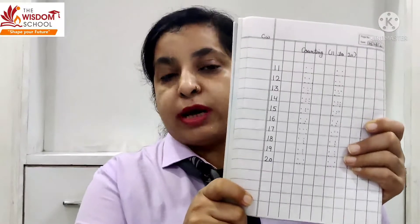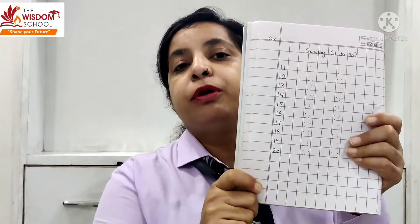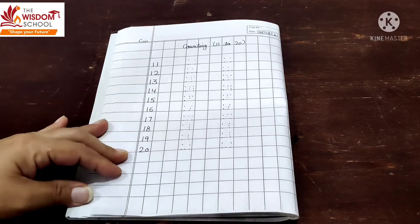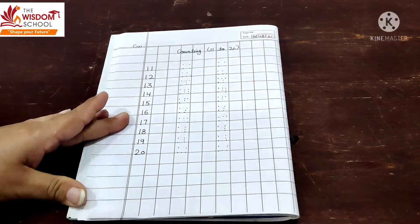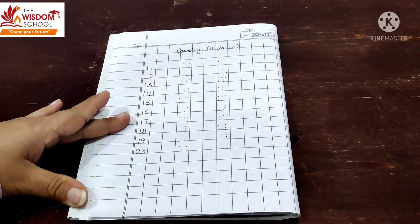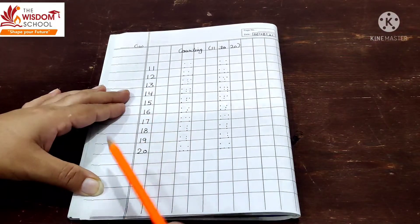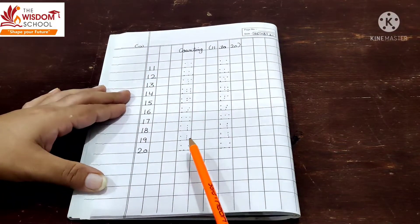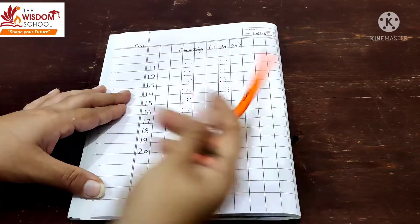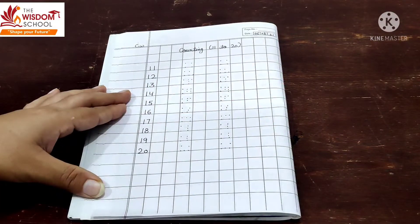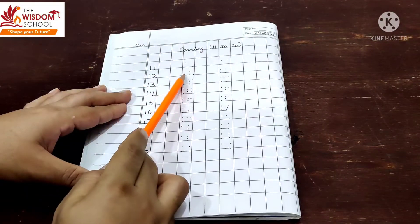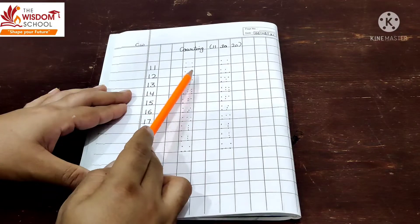Counting 11 to 20 in our maths notebook. Okay बच्चा, shall we start? Let's start. Kids, आज हम अपनी notebook में ऐसे बनाएंगे — आप अपनी मम्मा को बोलो यहाँ counting लिख कर दें और साथ में dots लगा कर दें। 1 1 है तो 2 times 1 की dot। 1 2 है तो 1 time 1 की, then 2 की 1 time।